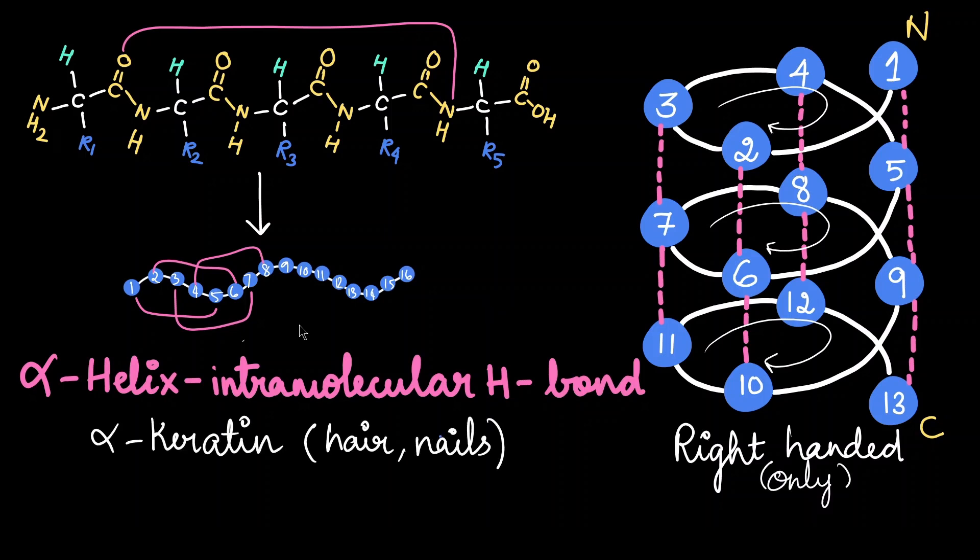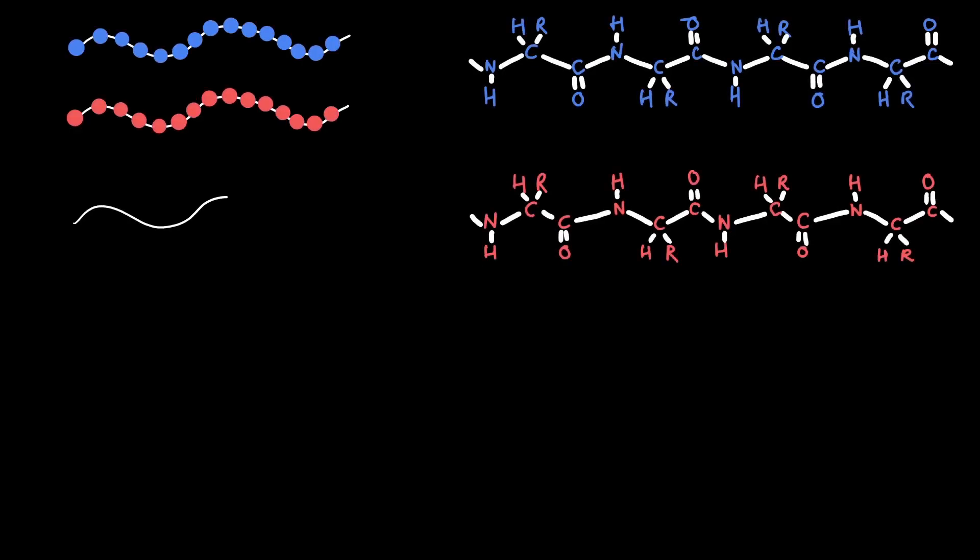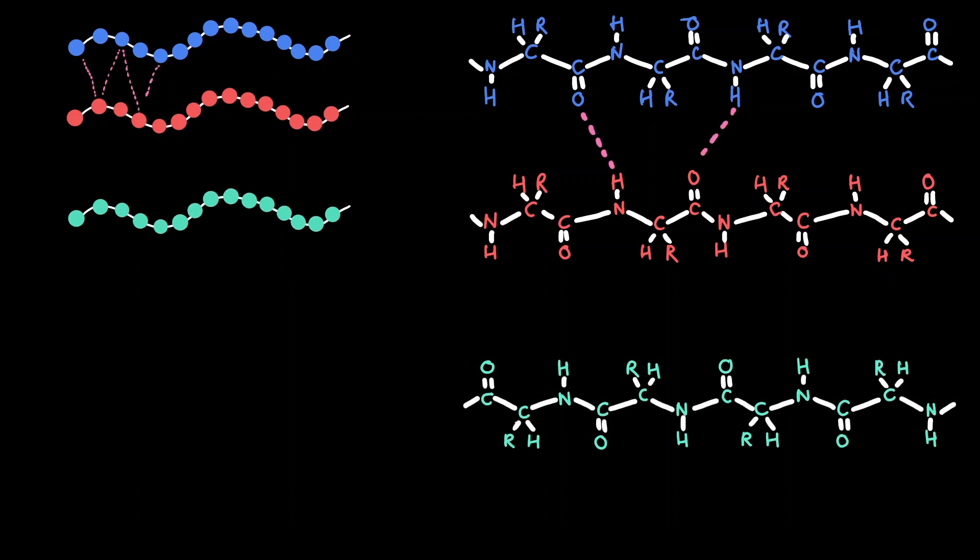The stability here is due to intramolecular hydrogen bonding, meaning hydrogen bonds that are formed within the initial polypeptide. Protein helices are always right-handed. An example of a protein containing alpha helix is alpha keratin, the protein found in the hair and nails of mammals.